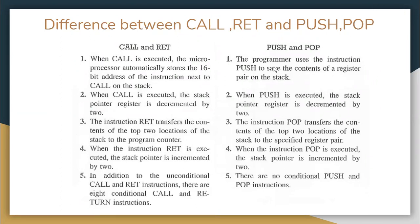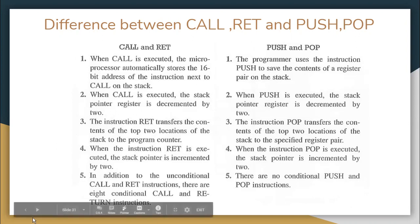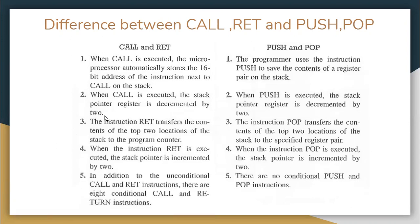The programmer uses the instruction push to save the contents of the register pair on the stack, in the case of push and pop. When call is executed, the stack pointer register is decremented by two. Since it is an implicit push, automatically the stack pointer is decremented by two and the higher order and lower order bits of the program counter are pushed into the stack.